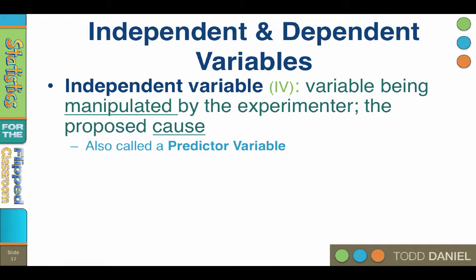When we use variables for research, we need some new terminology to describe them. In research, we use independent and dependent variables. The independent variable, or IV, is the variable that is manipulated by the experimenter. The IV is the proposed cause, also known as a predictor variable.